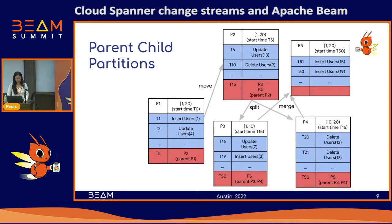Partition p3 tracks key ranges 1 through 10 and partition p4 tracks 10 through 20, both with the same start timestamp at t15. They track changes up until t50, at which point the final type of Spanner operation occurs: a merge. Both p3 and p4 are merged into p5, which tracks the entire key range and has a start timestamp at t50.